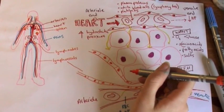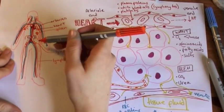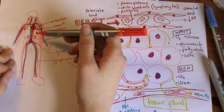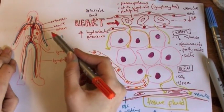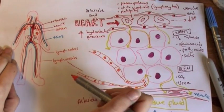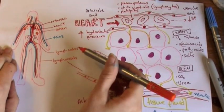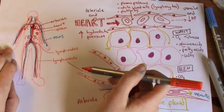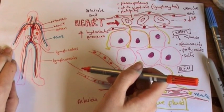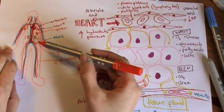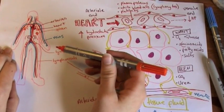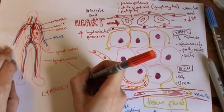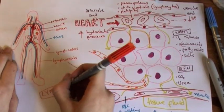We've also got lymph vessels. Lots of tissue fluid drains back into the veins but also drains into the lymph vessels. Lymph is really important. We have lymph nodes in your armpits, your tonsils, and your spleen — and your thymus. These are all responsible for producing lymphocytes — your B lymphocytes and T lymphocytes. Along these nodes you've got a storage of white blood cells which are really important for fighting infection.